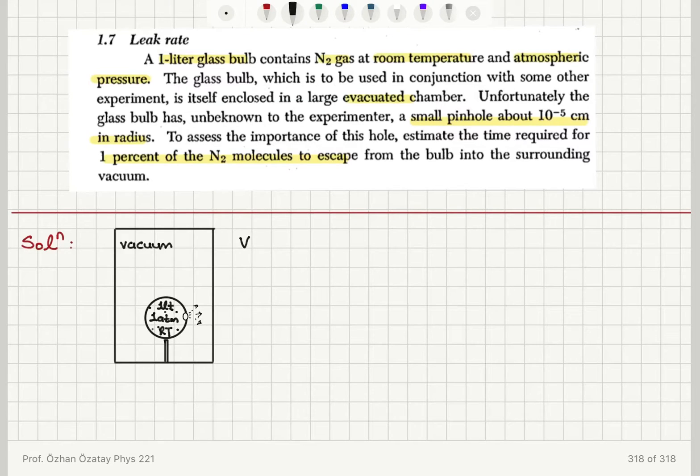So let's call V the glass bulb volume, which is given in the problem as one liter, that is 10 to minus 3 meter cube or 10 to 3 centimeter cube. The pinhole has a radius that is 10 to minus 5 centimeters.